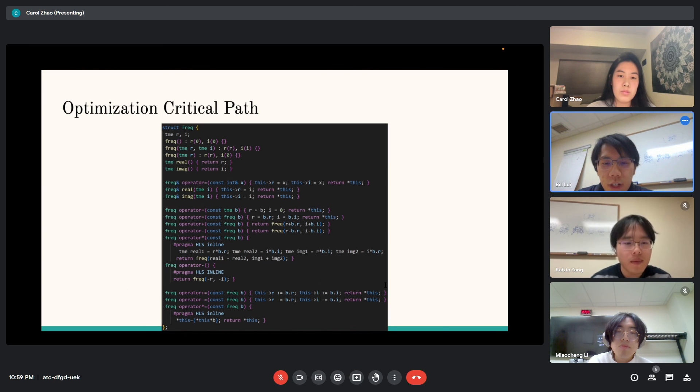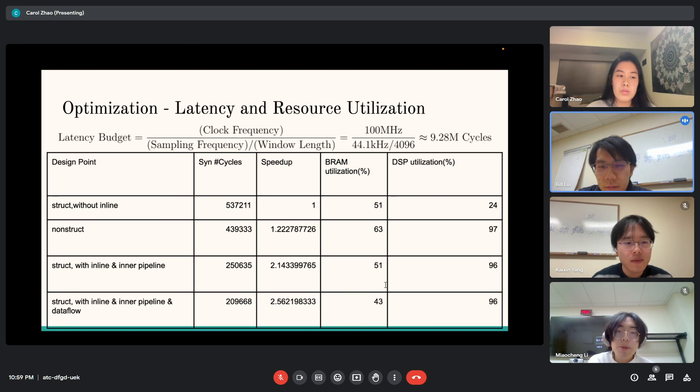Finally, let's conclude the design points during realization, comparing the latency and resource usage. The estimated budget to achieve real-time audio processing is around 9 million cycles, which is a fairly loose budget. The baseline is the design point where we use the structure for complex type and use the inline pragma. This has latency around 500K cycles, with BRAM utilization being 51 percent and DSP being 24. The design point where we didn't use structure but broke down the multiplication and additions has a speedup of around 1.2, and DSP is roughly up to 97. The third design point with structure inline and FFT inner loop pipeline pragma achieved 2.1 speedup. The last design point with dataflow pragma achieved 2.5 speedup. Thank you.